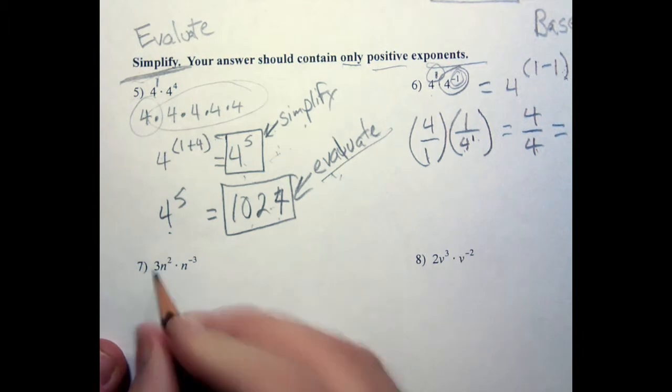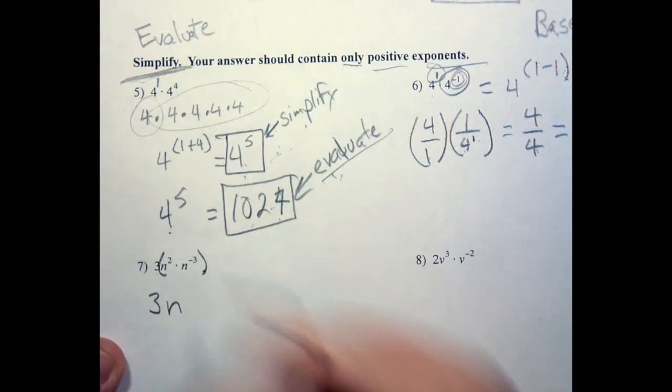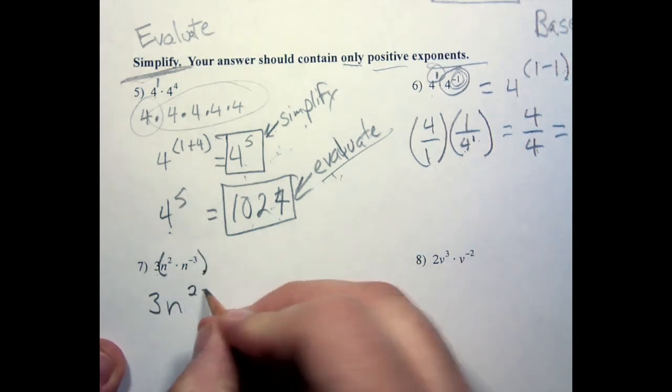Now this one I have a 3, right, so I have 3 times n squared, but now for the n part, I'm going to say 2 minus 3.